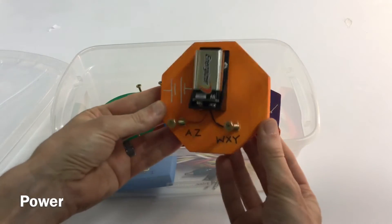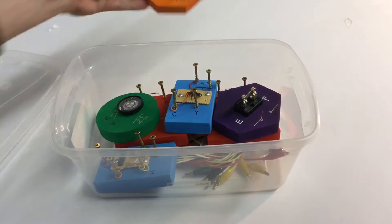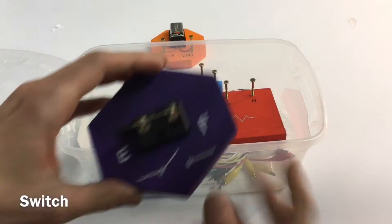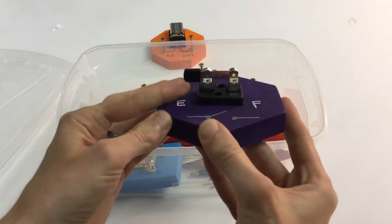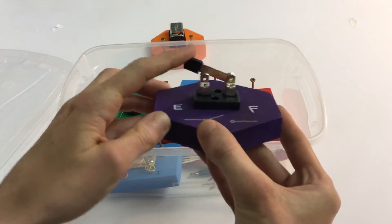So first we have our source of power, very important. We have an on and off switch. This is really a place where you can break the circuit or reconnect it.